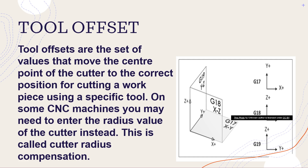G10 fixture and tool offset setting. Tool offsets are the set of values that move the center point of the cutter to the correct position for cutting a workpiece using a specific tool. On some CNC machines you may need to enter the radius value of the cutter instead. This is called cutter radius compensation.